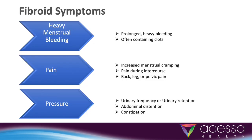Many women who seek treatment complain of painful or heavy periods. If fibroids are large enough, they may push on surrounding anatomy, including the bladder and rectum. They may experience urinary frequency, constipation, and increased abdominal girth.